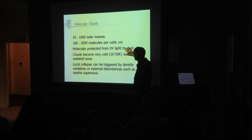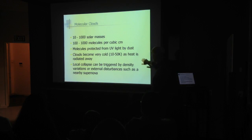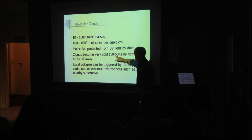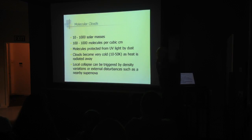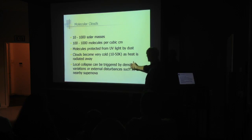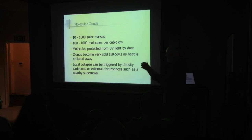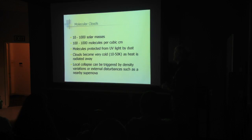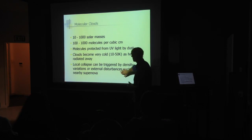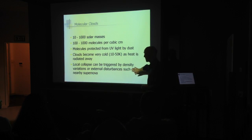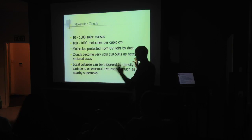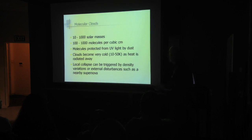The molecules are protected from UV by the dust. Clouds get really cold — down to 10 to 50 degrees above absolute zero. The local collapse of that cloud can be triggered by either little density variations — areas with more dense material than others can collapse slowly under gravity — or more likely, a shockwave from a nearby supernova that rattles the system and triggers collapse.